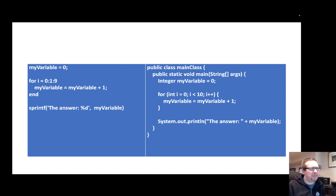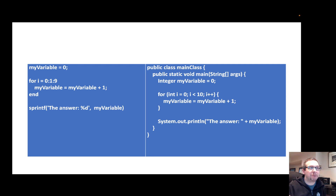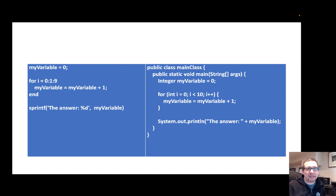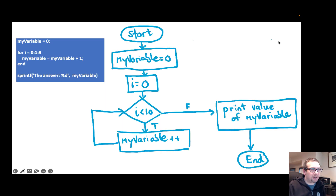Here are two examples of programs written in procedural form — one in MATLAB and one in Java. This could apply to a number of different programming languages. Flowcharts are a very classic way of representing programs, especially procedural ones. There's an initialization of a variable at the top called 'my variable,' then a for loop that goes from zero to nine in MATLAB and up to ten in Java, so both iterate ten times. Inside the loop, the value of the variable is changed.